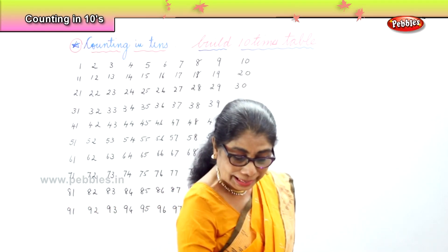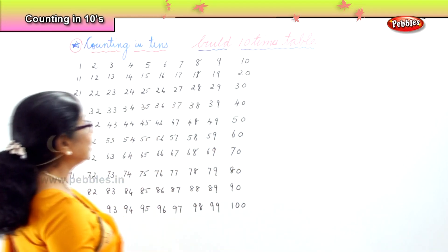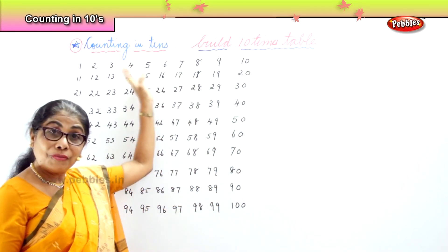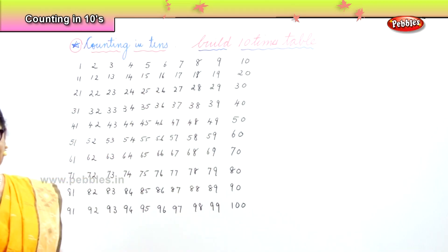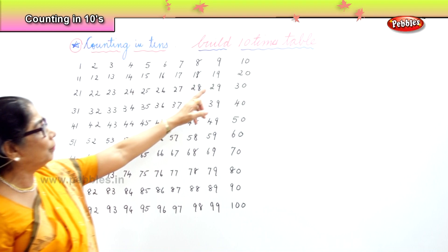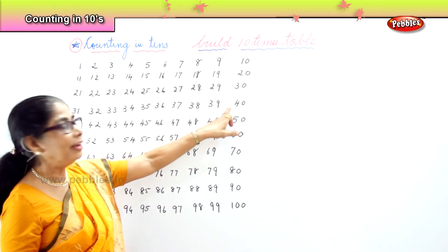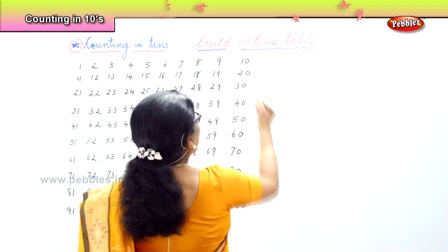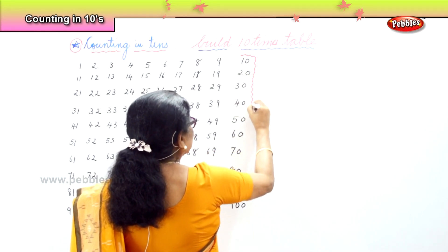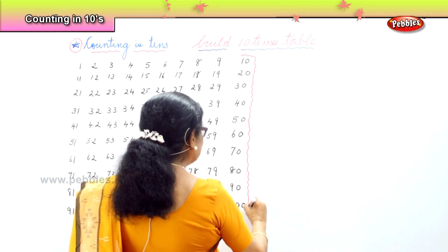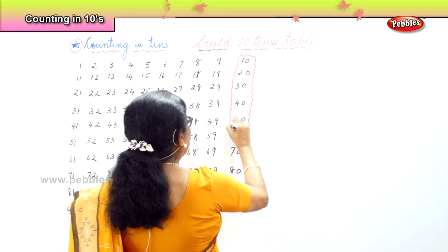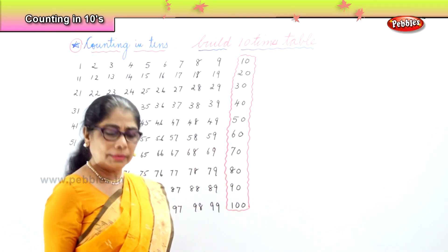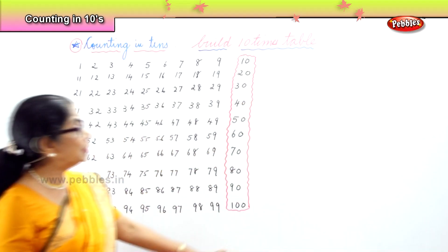What we are trying to do is building up the 10 times table. For that, all you need to do is write the numbers from 1 up to 100. Now look at the last number — you already got the 10 times table. Look: 10, 20, 30, 40, 50, 60, 70, 80, 90, 100. Now I am going to box it. Put it into a box — the 10 times table. Very easy! Building the 10 times table by simply writing 1 to 100 and then boxing the last 10.